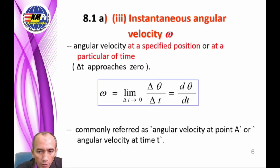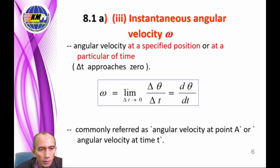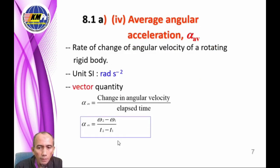Instantaneous angular velocity is defined as the angular velocity at a specified position or at a particular time. It is given by omega equals the limit of delta theta over delta t, or d theta over dt. It is commonly referred to as angular velocity at point A or angular velocity at time t.